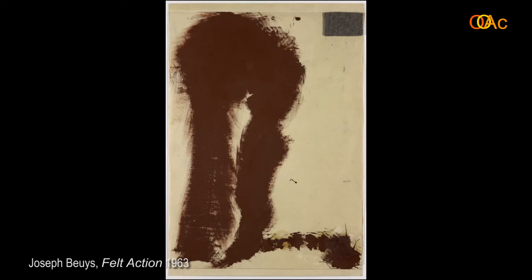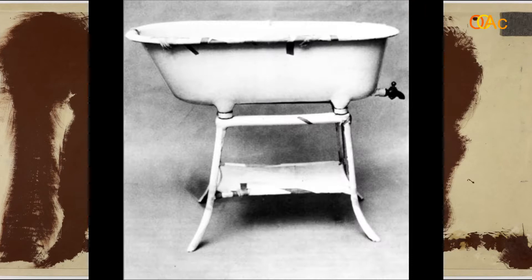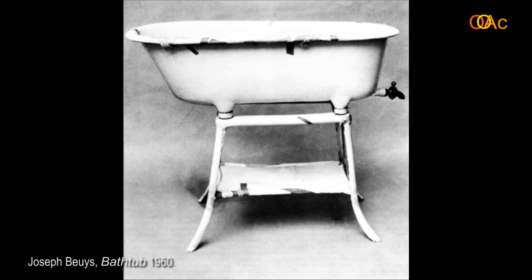This one is Felt Action, 1963, playing around with it. But it is the work known as Bathtub 1960 that is really the key transitional point — the gateway, as it were — whereby Cosmology B, the art of his mature period, his Düsseldorf period, now begins to come into being.